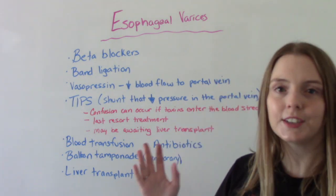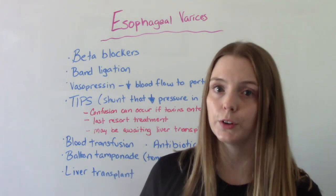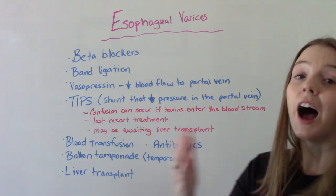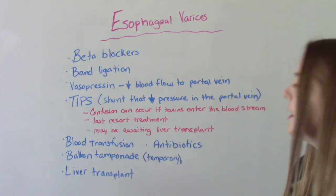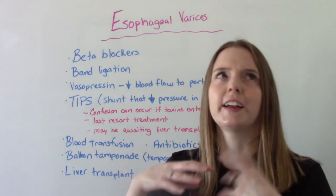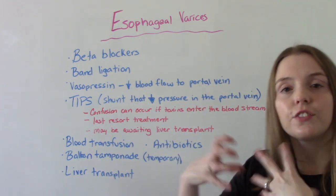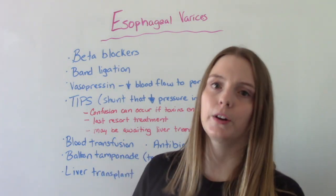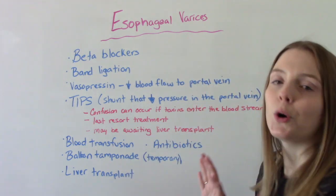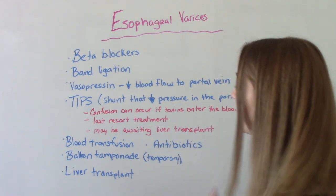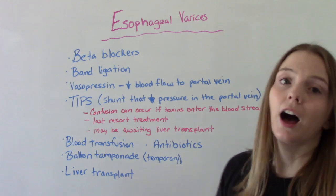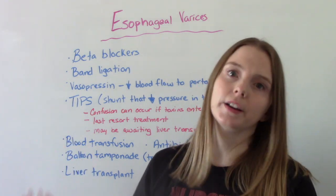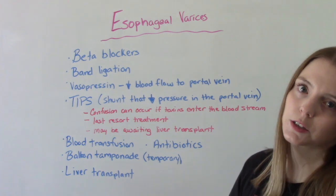Because patients are losing lots of blood, they'll need a blood transfusion to restore blood volume. They're also at high risk for infection due to blood loss, so they'll be put on antibiotics. Another procedure is balloon tamponade, which is temporary — typically used for about 24 hours — where a balloon is inflated to stop the bleeding. The big risk is that once the balloon is deflated, they're at higher risk for bleeding again. And finally, the last resort treatment, if they are able, is a liver transplant, since procedures like balloon tamponade and TIPS can actually put the patient into liver failure.